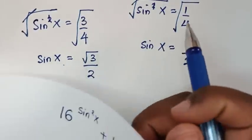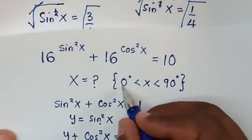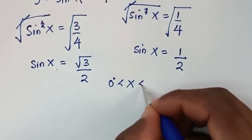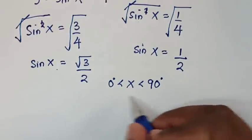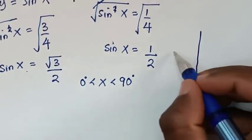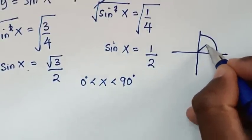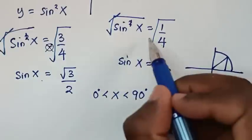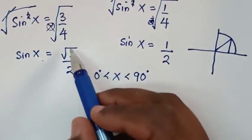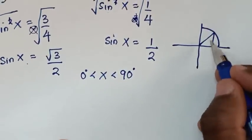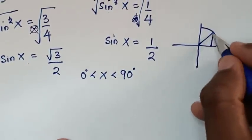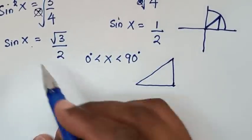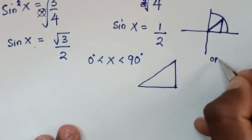Because in our problem the condition is x is between 0 to 90 degrees, this is the first quarter of the cycle. That's why we only consider the positive sign — we didn't consider the negative sign because x is in the first quadrant.